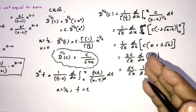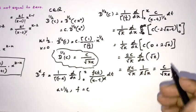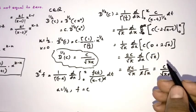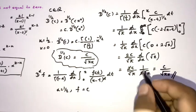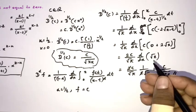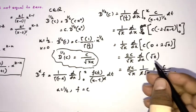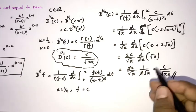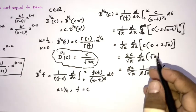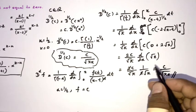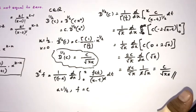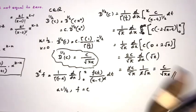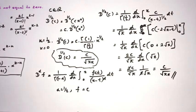In traditional differentiation, the derivative of a constant is always equal to zero. But if we consider the half-derivative, the half-derivative of a constant is not equal to zero. Thank you for watching.